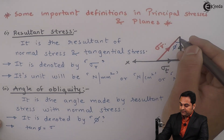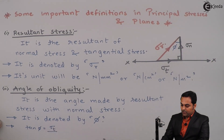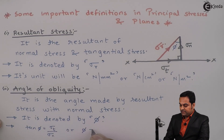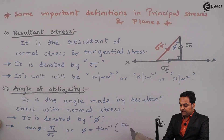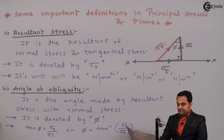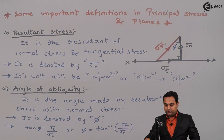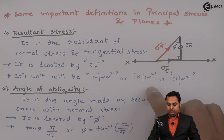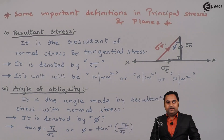The formula is: tan Φ equals Sigma T over Sigma N — that is, the opposite side upon the adjacent side. Or equivalently, Φ equals tan inverse of Sigma T upon Sigma N, that is tangential stress upon normal stress. This is the formula to calculate the angle of obliquity.